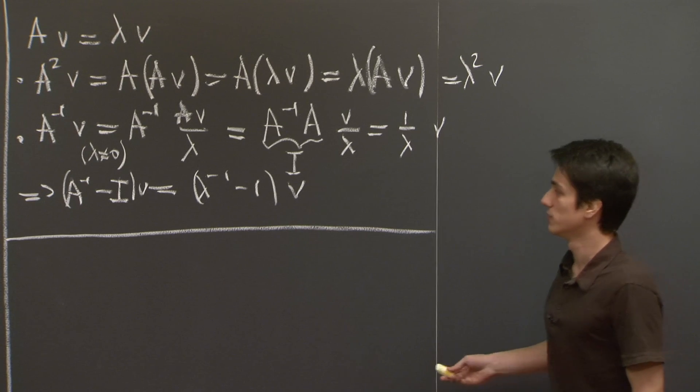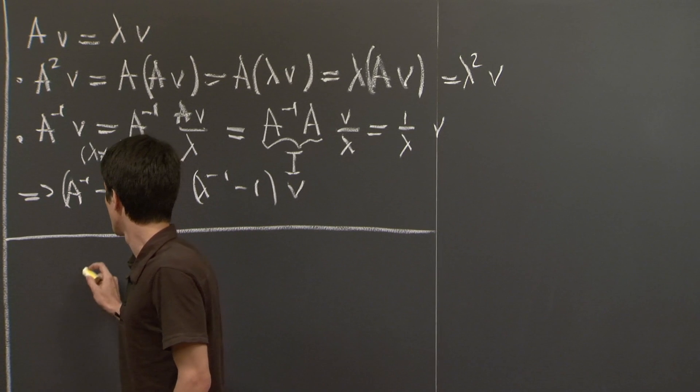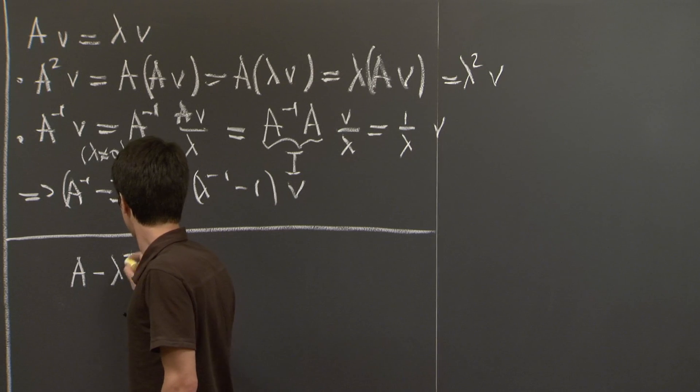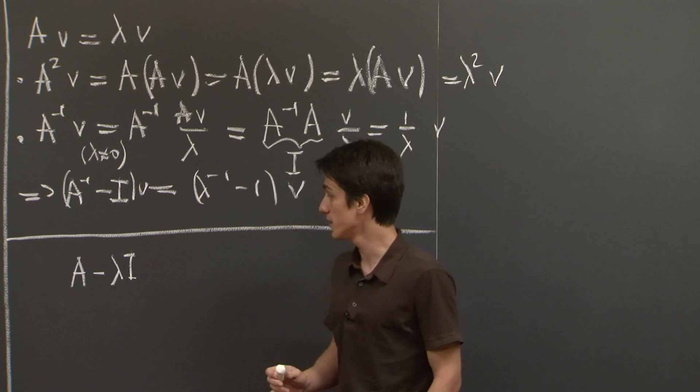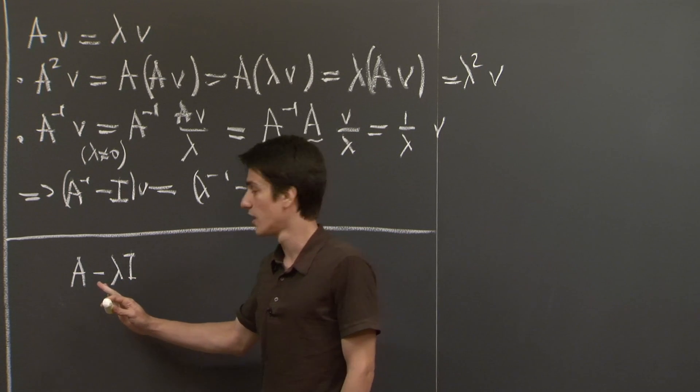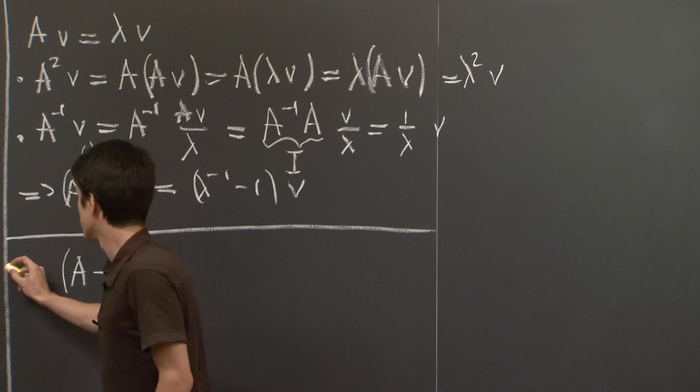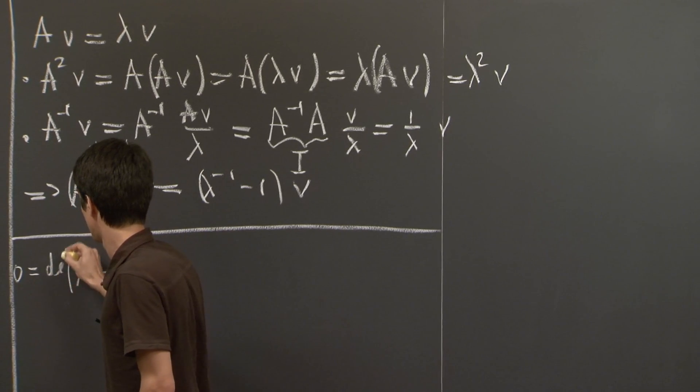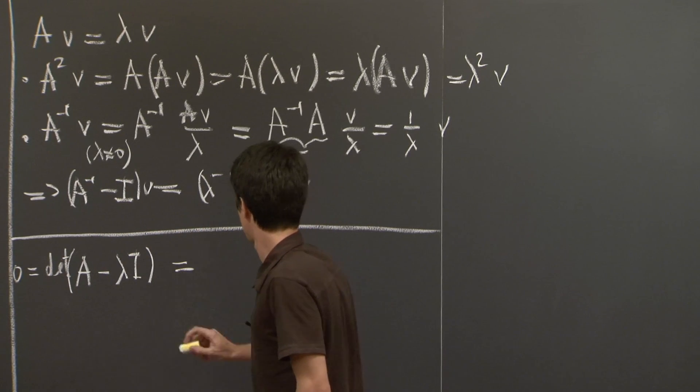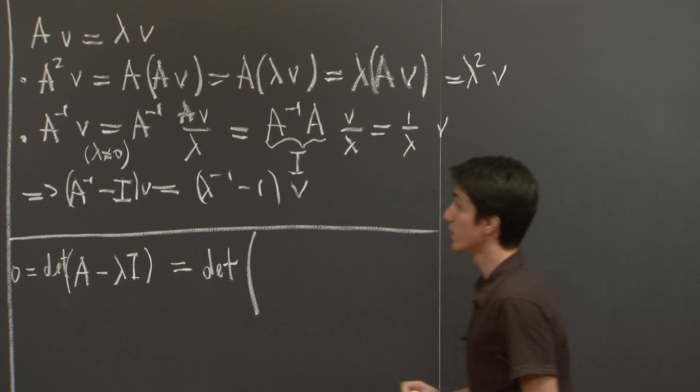So how do we find the eigenvalues? Well, what does it mean for lambda to be an eigenvalue of A? It means that the matrix A minus lambda times the identity is singular, which is precisely the case when its determinant is 0. So we have, we need to solve the following equation,